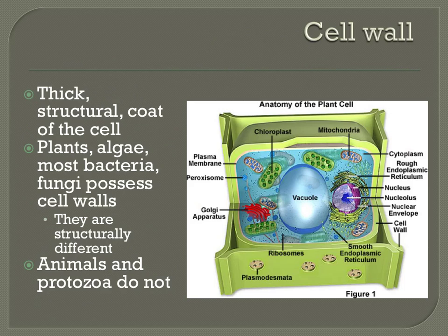The cell membrane was described as a thin, fluid layer. The cell wall, on the other hand, is typically much thicker and provides the cell with a lot of structure. Many different types of cells possess cell walls, but those cell walls can be quite different. The plant cell to the right, for example, has an extraordinarily thick cell wall made up of cellulose. Some bacteria have a cell wall made up of a sugar and protein substance called peptidoglycan, and fungi possess a cell wall that contains chitin.